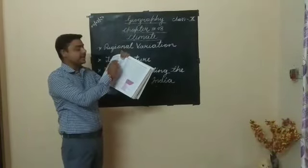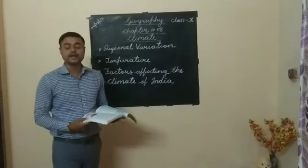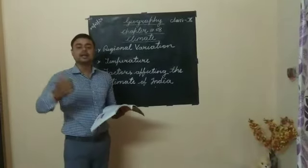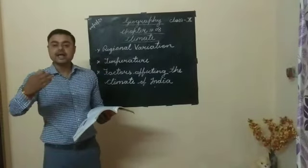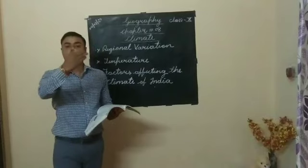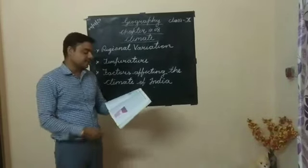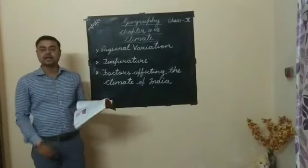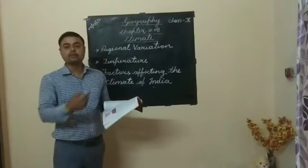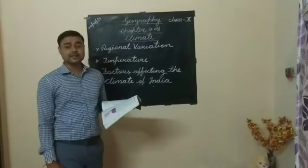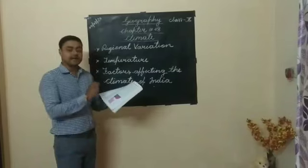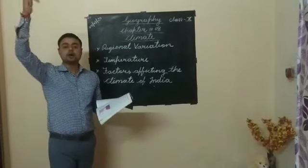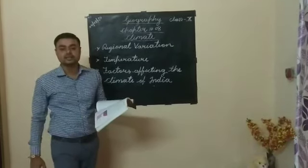The next point is varied relief features. In our country India, different types of relief features are present — like the desert, mountains, plateau, plains, and coastal areas. The next point is altitude. When you read about altitude, you get the answer for why Dras and Kargil have low temperature and why Rajasthan's Jaisalmer has high temperature. Altitude means the temperature decreases by 1 degree Celsius for every 166 meters you rise up on mountains or high altitude.